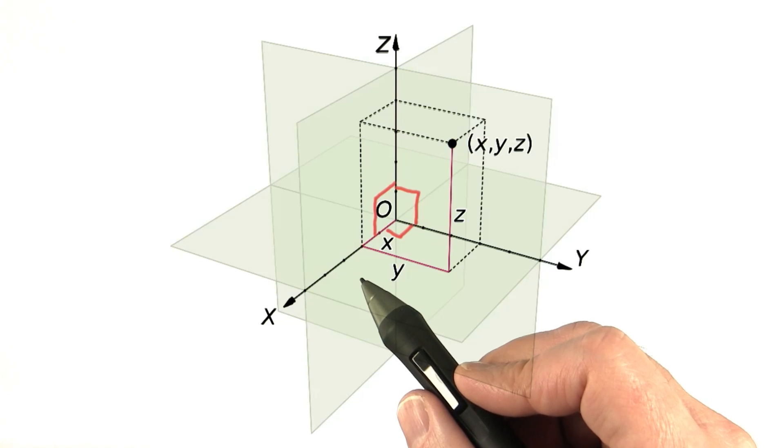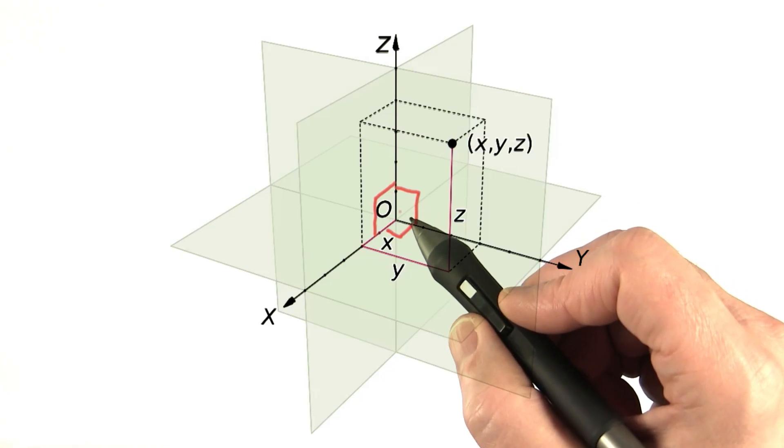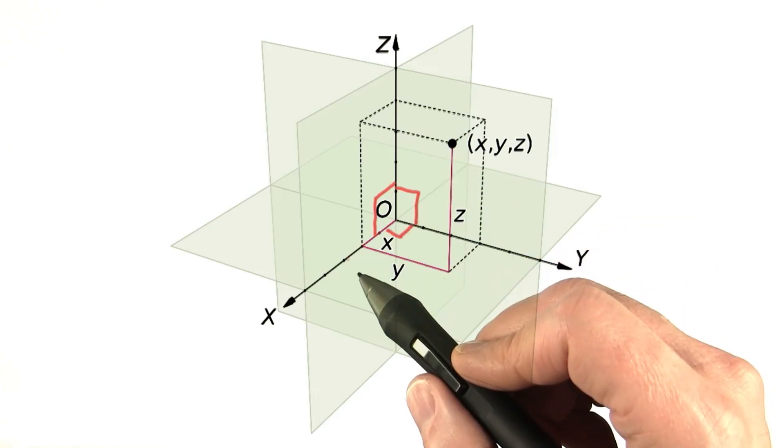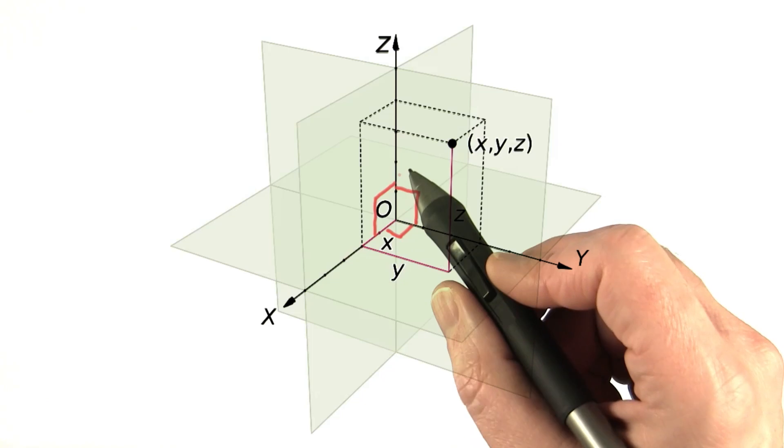It's possible to define a coordinate system with axes that are not perpendicular, but this is rarely done in practice. For example, finding the distance between two points becomes a tricky concept when the axes are not mutually perpendicular.